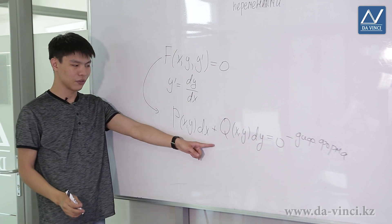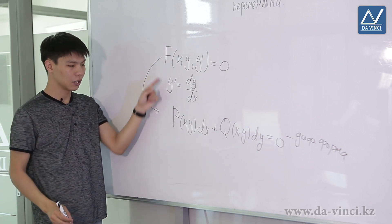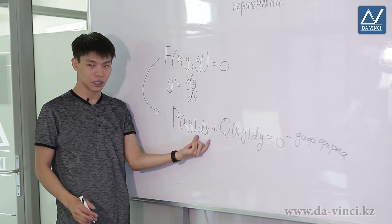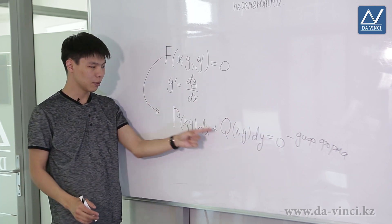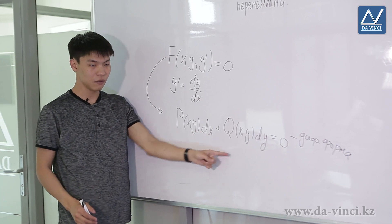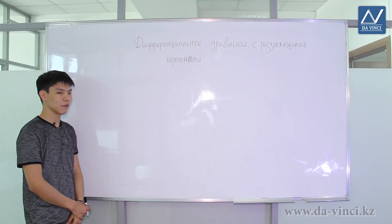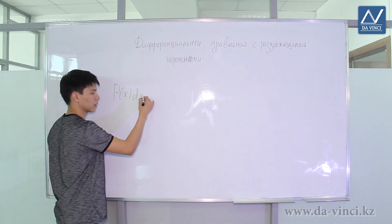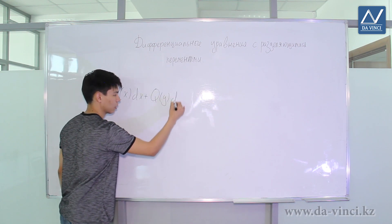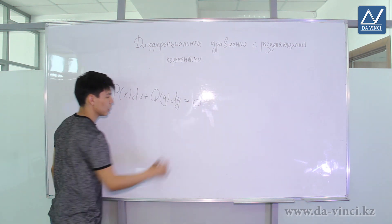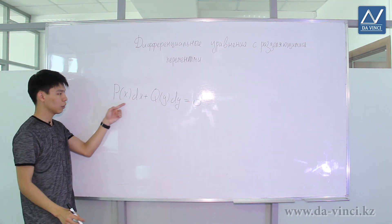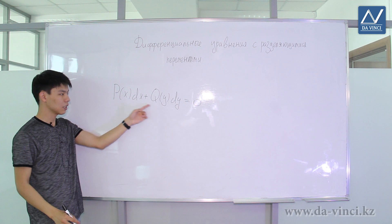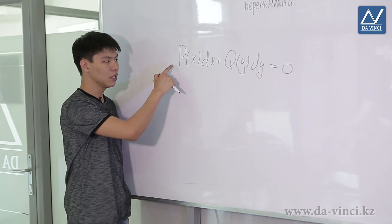Vice versa: if we have an equation in differential form, we can rewrite it in the usual form by rearranging so that we have dy divided by dx — in particular, by dividing everything by dx to express y'. The simplest equation in differential form is: P(x) dx plus Q(y) dy equals zero — where dx is preceded by a function that depends only on x, and dy is preceded by a function that depends only on y. An equation of this kind is called a differential equation with separated variables.